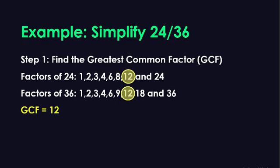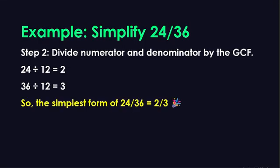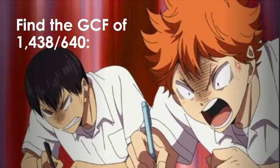The factors of 36 are 1, 2, 3, 4, 6, 9, 12, 18, and 36. By inspection, our GCF is 12. Now we proceed to Step 2: divide both numbers by the GCF, which is 12. 24 divided by 12 equals 2, while 36 divided by 12 equals 3. So the simplest form of 24 over 36 is 2 over 3.